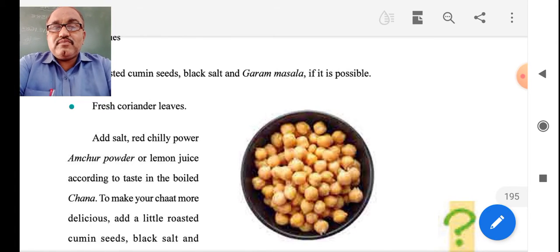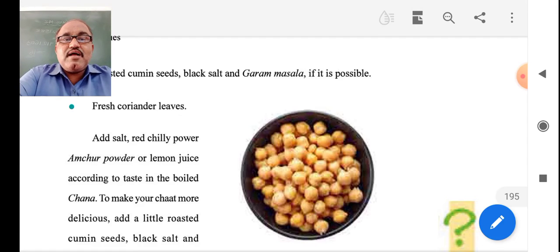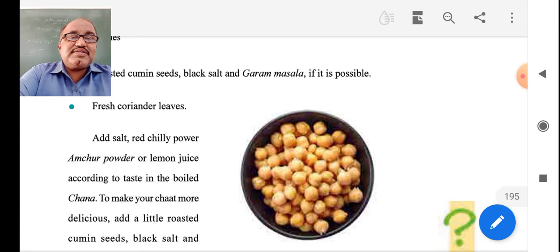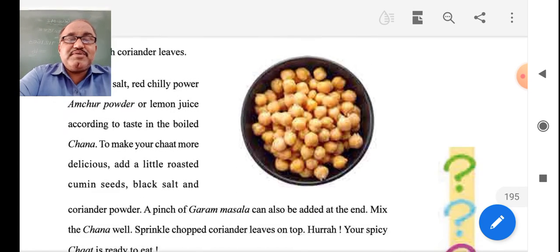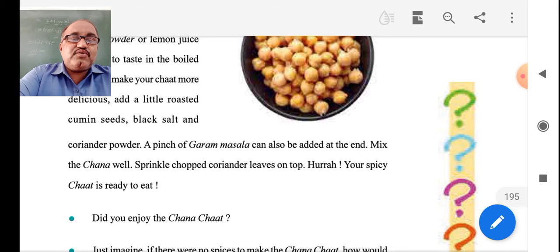Now dear students, what is the process to make this? Add salt, red chili powder, amchur powder with lemon juice according to taste in the boiled chana. To make your chana chaat more delicious, add a little roasted cumin seeds, black salt and coriander powder.